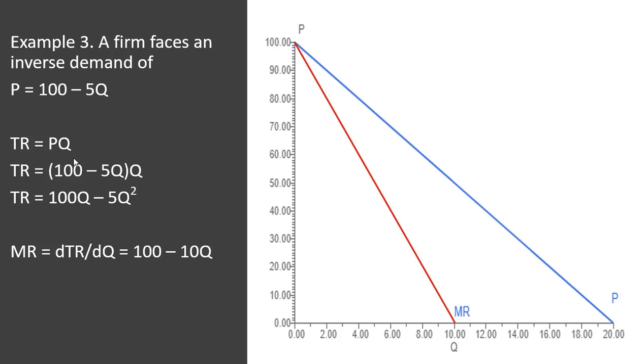So we get total revenue first. Price times quantity. What's price? 100 minus 5Q. So I substitute 100 minus 5Q in for the P term, and that's going to be multiplied throughout by Q. And then simplifying, Q times 100, Q times minus 5Q, we get this result. We take the derivative of total revenue, and you have your marginal revenue equation. All right, that's it. I hope you found this video helpful.